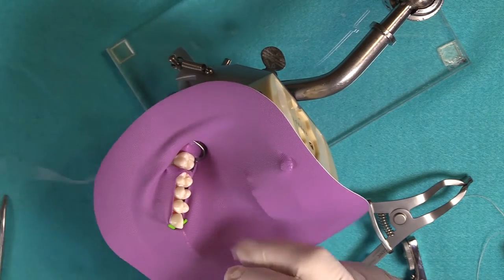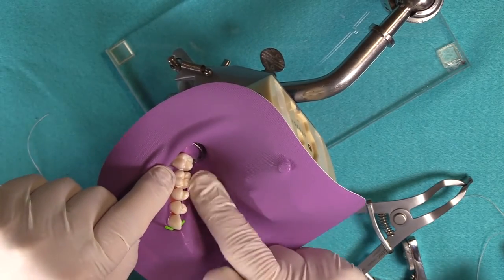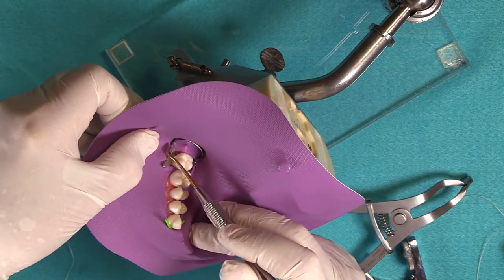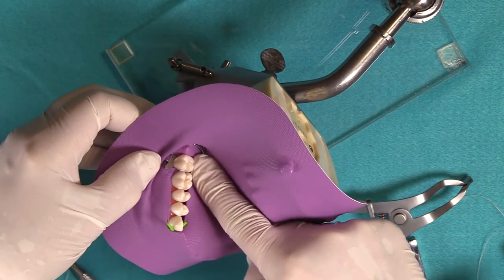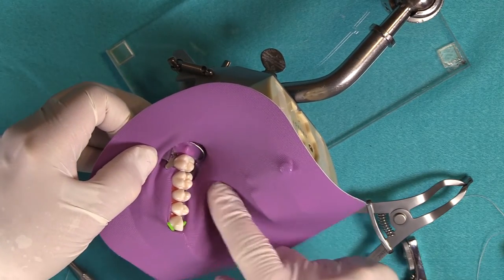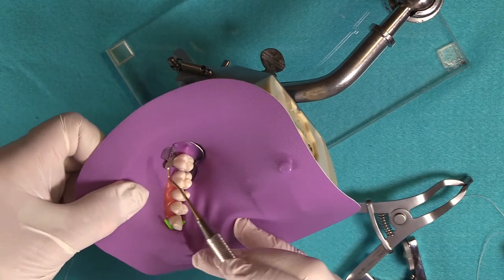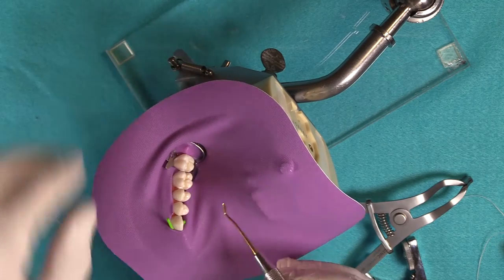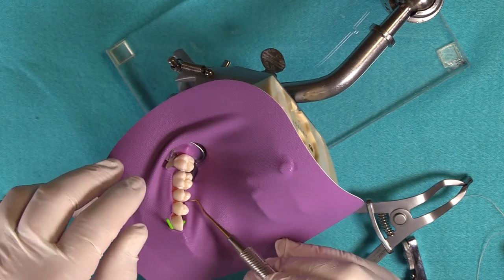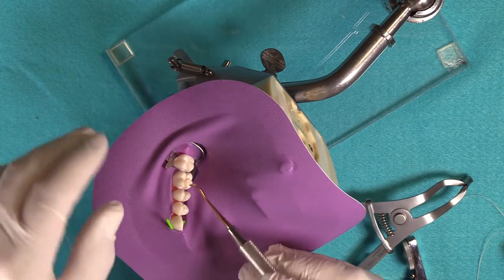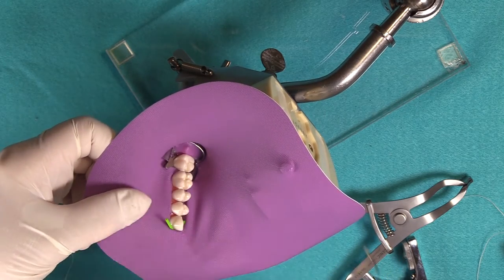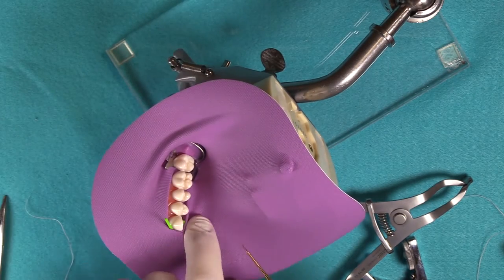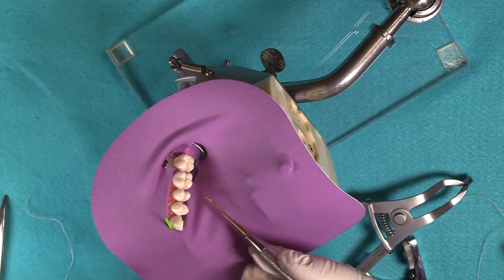So again, using that knife-edge concept. I normally don't lubricate it because it's really easy to get that through, and don't forget to stretch the dam off of the wings. There you go. And then the dam is rolled under so that it somewhat seals the lingual and the buccal vestibule.